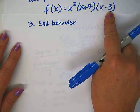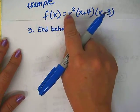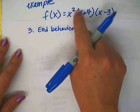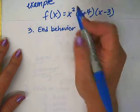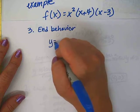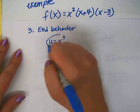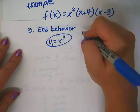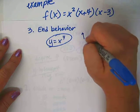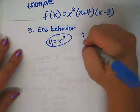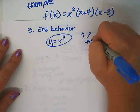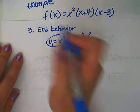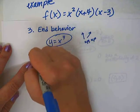Next, we're going to do end behavior. Since this one's not multiplied out, just remember you would foil it all together — x squared times x times x — so the leading term would be y equals x to the fourth. That is the power function it will resemble. Therefore, the ends of the graph will be up, up.